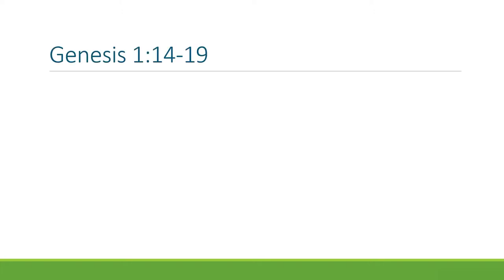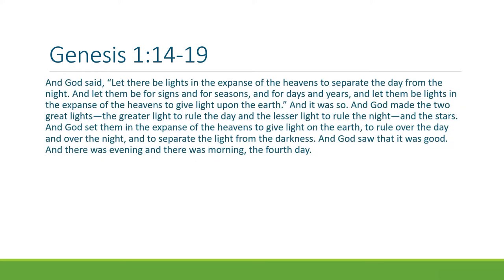First we'll read the text, Genesis 1 verses 14 to 19. This is the creation on day four. It says, and God said let there be lights in the expanse of heavens to separate the day from the night, and let them be for signs and for seasons and for days and years. And let them be lights in the expanse of the heavens to give light upon the earth and it was so. And God made the two great lights, the greater light to rule the day, the lesser light to rule the night, and the stars. And God set them above the expanse of the heavens to give light on the earth, to rule over the day and over the night, and to separate the light from darkness. And God saw that it was good, and there was evening and there was morning, the fourth day.